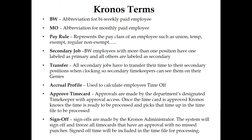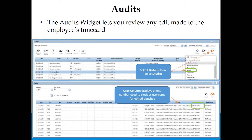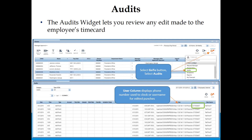Sign Off: Sign offs are made by the Kronos administrator. The system will sign off and freeze all time cards that have an approval with no missed punches. Signed off time will be included in the time file for processing. Audits: The Audits widget lets you review any edit made to an employee's time card. Select the Go To button, then select Audits. The User column displays the phone number used to clock or the username for edited punches.